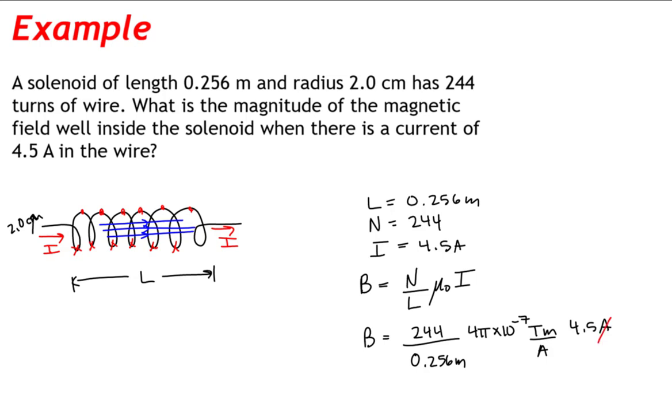An amp in the numerator cancels with an amp in the denominator. A meter in the numerator cancels with a meter in the denominator. When I plug this into my calculator, I get that the magnetic field well inside the solenoid is equal to about 5.4 times 10 to the minus 3 tesla.